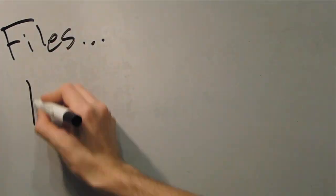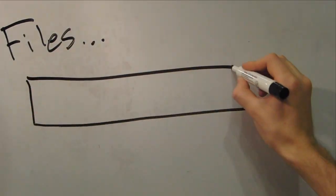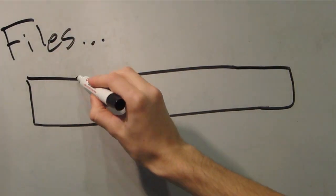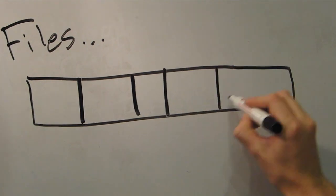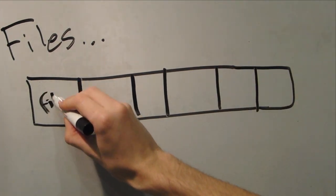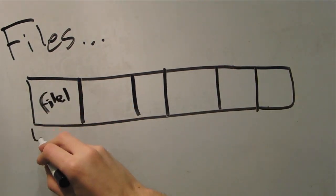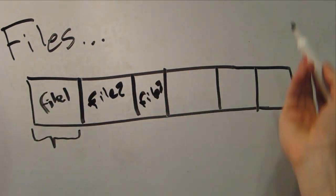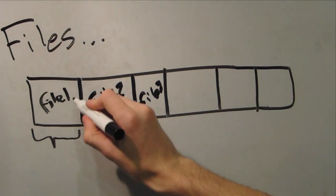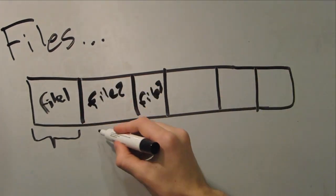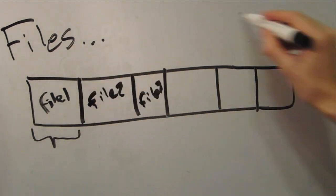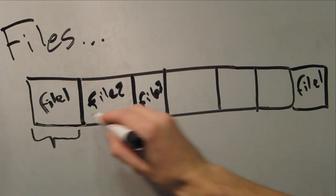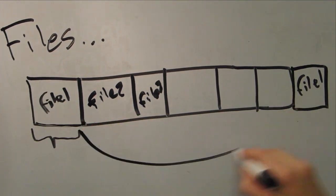How are files stored on disk? The simplest way to think of it would be to have every file stored sequentially in the order in which it was created. This however has an obvious problem. When a file changes size, you can't just write over the file in front of it. Instead, you have to add some onto the end of the disk.